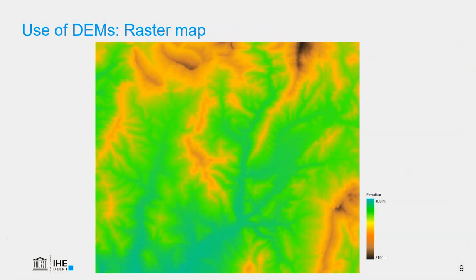Here we look at the digital elevation model in the form of a raster. Each cell represents an elevation value, and we use a color ramp to give different elevations different colors. Note that this is a continuous raster without sharp boundaries, therefore ramps are used. Make sure that you use intuitive colors — blue and green are normally associated with low areas, while darker colors, or even white for snow, are associated with higher areas.